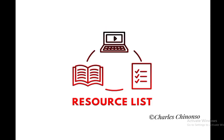The fifth lead magnet idea is resource lists. You can create a resource list with tools, software, and products that can help your audience — like a collection of useful articles, videos, or other content that is valuable to people in your niche. More like a resource library with several tools and software useful to people in your niche. They'll be happy to submit their email or WhatsApp number to claim such a list. That is the fifth lead magnet idea for your affiliate marketing business.